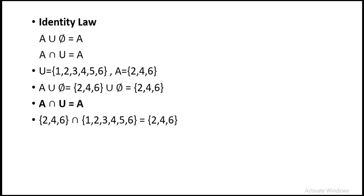So these are all the laws we were talking about: closure property, commutative, associative, and distributive. These are the properties of operations on sets. Hope you guys have understood and now have a better understanding of all the properties of operations on sets. Thank you.